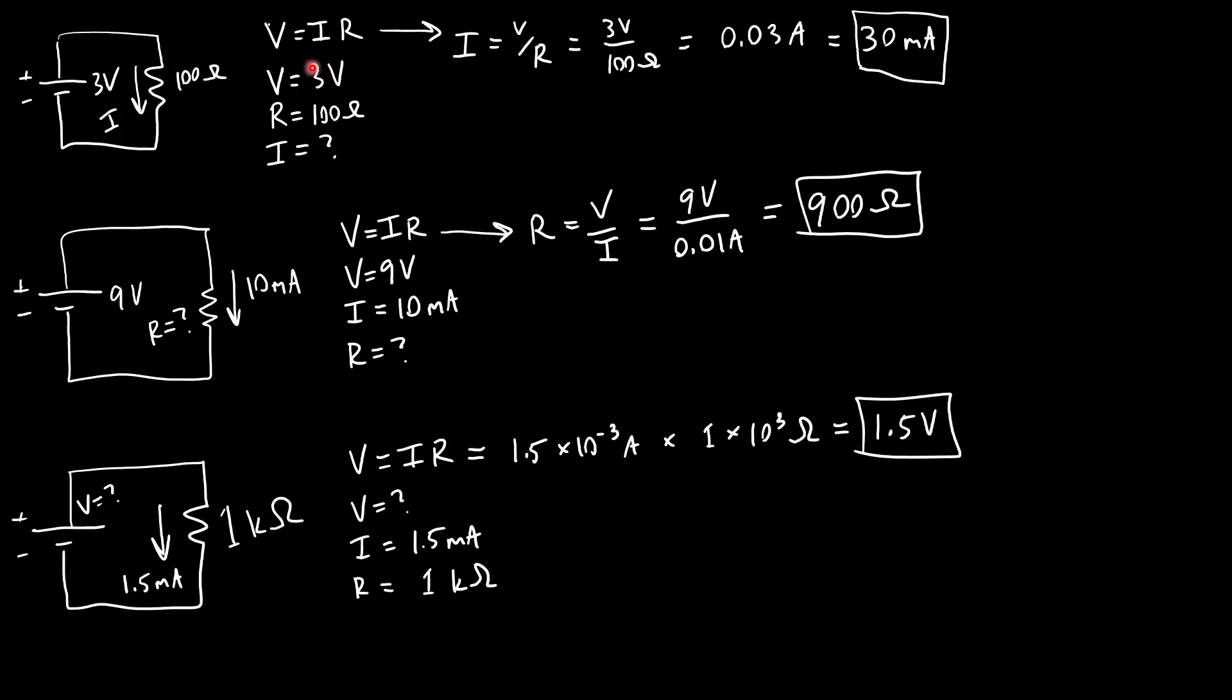So there we go with three different examples with different unknowns showing how you can use Ohm's law to solve for different things depending on what information you are given. But all three of these circuits are very simple, where we just have a single battery and a single resistor. In future videos, we're going to show how Ohm's law is still useful for covering and analyzing more complex circuits that have multiple batteries and multiple resistors. But before we do that, we're going to need to introduce some other topics like Kirchhoff's current law and Kirchhoff's voltage law and how circuit components behave when you connect them in series and parallel. So we will spend the next couple videos looking at that, in addition to discussing electrical power.